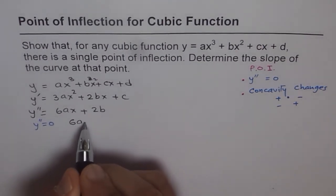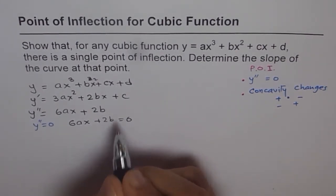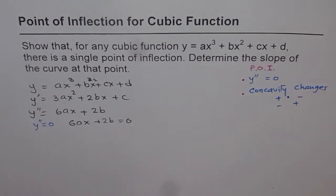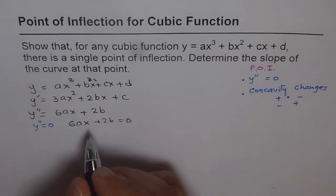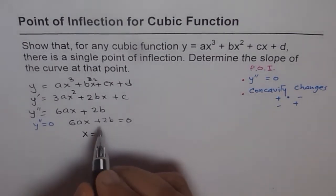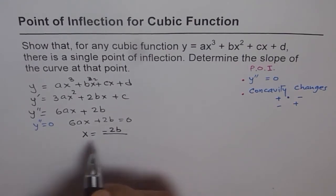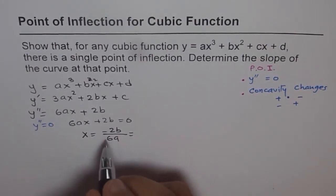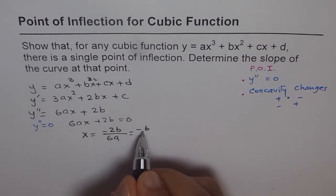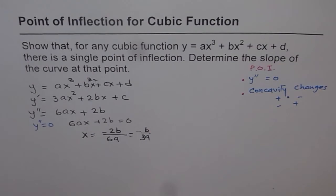We need to find 6ax plus 2b equals zero, and that gives us one particular answer. The value of x is equals to minus 2b divided by 6a, which can be simplified and we can write minus b over 3a.